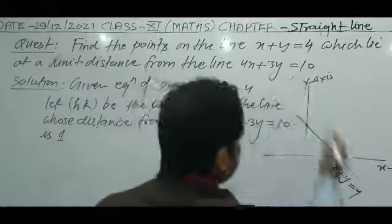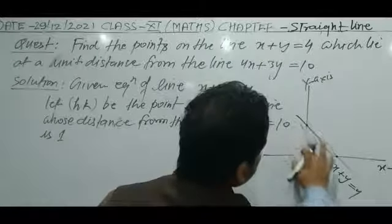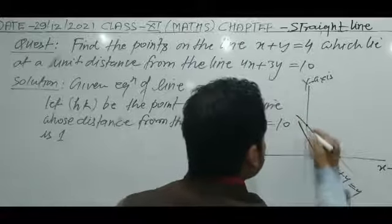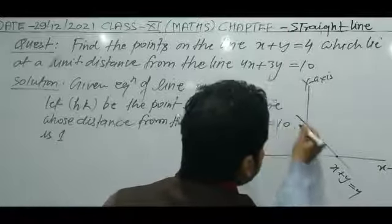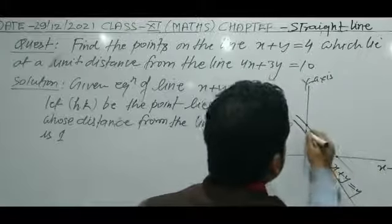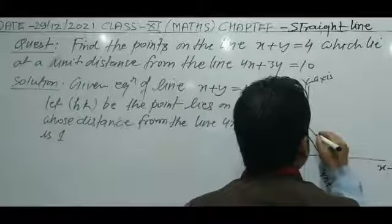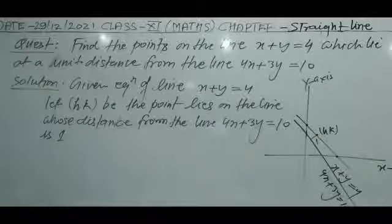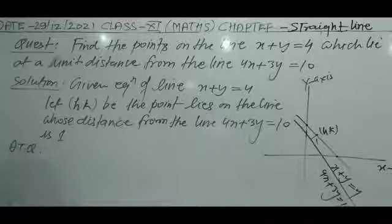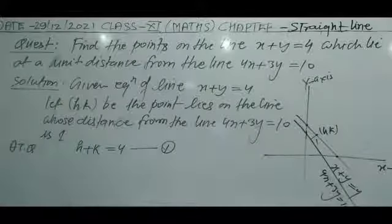The line 4x plus 3y equal to 10 intersects at approximately (2-something, 3-something). Let h comma k be the point. Since h comma k lies on the line x plus y equal to 4 and its perpendicular distance from line 4x plus 3y equal to 10 is 1, we can write h plus k equal to 4 — consider this equation 1.